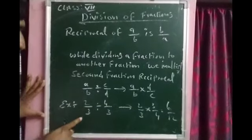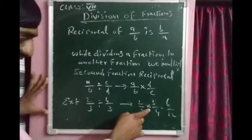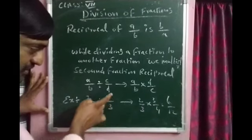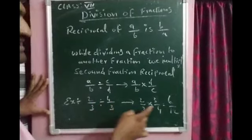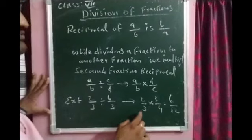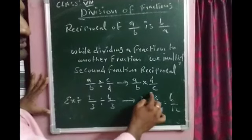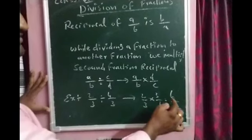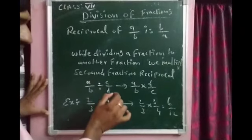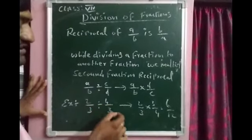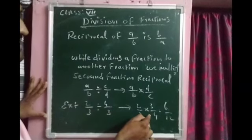One example: 2 by 3 divided by 4 by 3. This becomes 2 by 3 multiplied by the reciprocal of 4 by 3, which is 3 by 4. Write the reciprocal and multiply it: 3 twos are 6, 3 fours are 12. In division, write the reciprocal of the second fraction and multiply. This is the process.